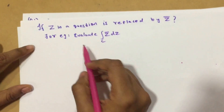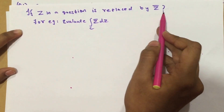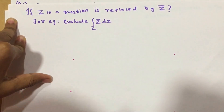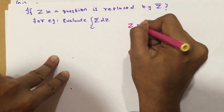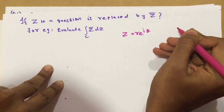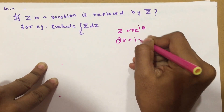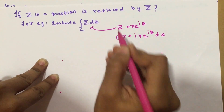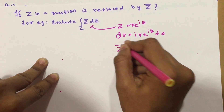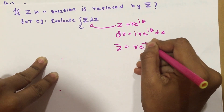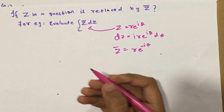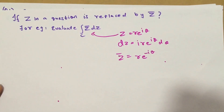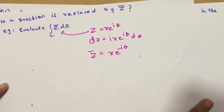Now we'll cover a new variety of questions in which z in the question is replaced by z̄. So for example: evaluate ∫z̄·dz. Since z = R·e^(iθ), dz = i·R·e^(iθ)·dθ as always. When you substitute z̄, you can write it as R·e^(−iθ), because z and z̄ are just conjugates. And that's how we solve this type.